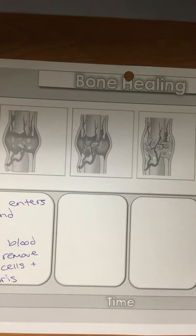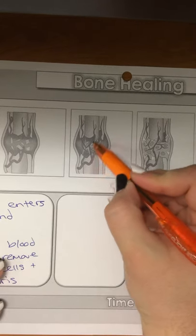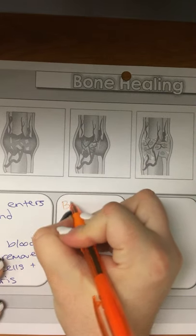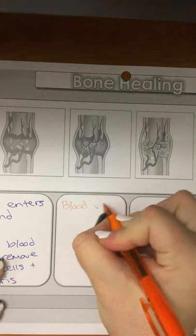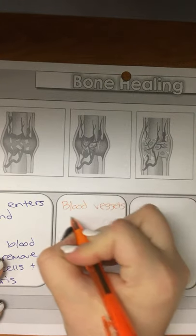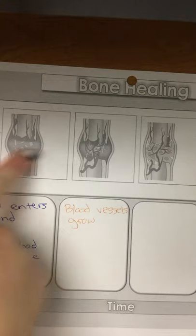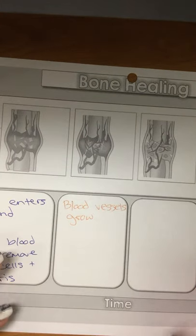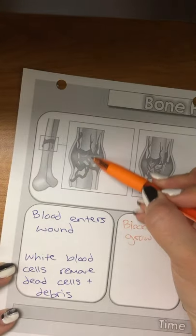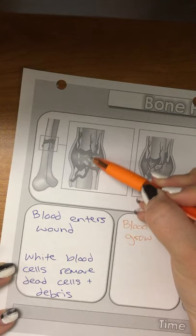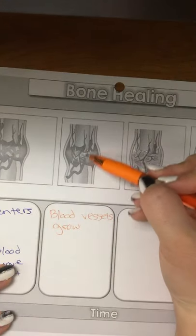Up next, blood vessels start to grow into it. You can see them here growing in. Whereas before it was just liquid blood over here, now the blood vessels are starting to repair themselves because they were here before and then they broke when you broke the bone. So now they're growing back in.